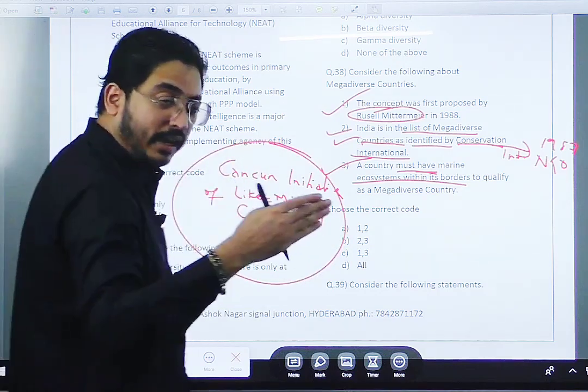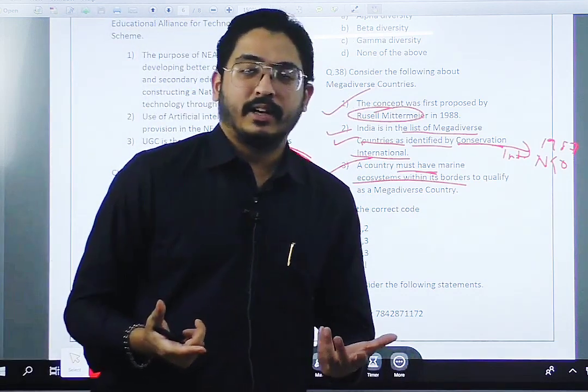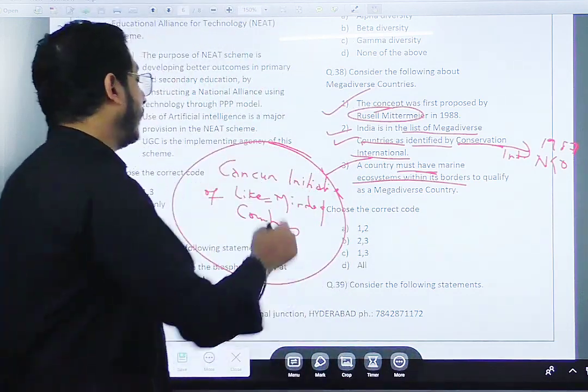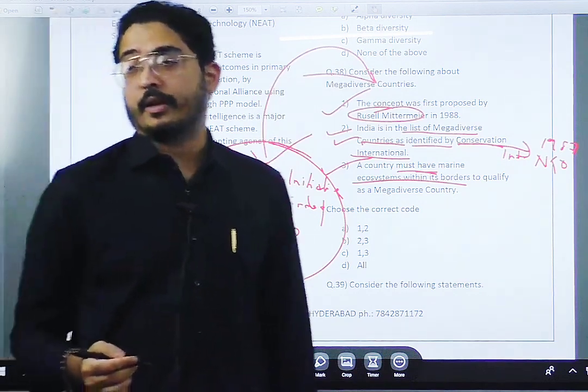All those mega diverse countries came together and they made one kind of declaration to protect these countries. That is called the Cancun Initiative related to mega diverse countries. We have covered all this in environment. Clear?